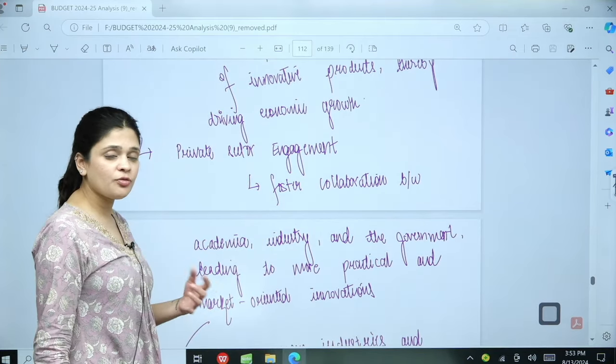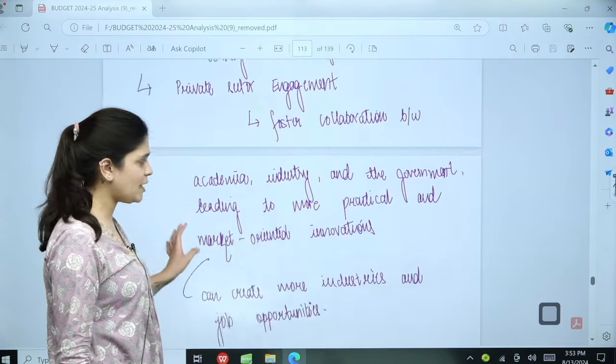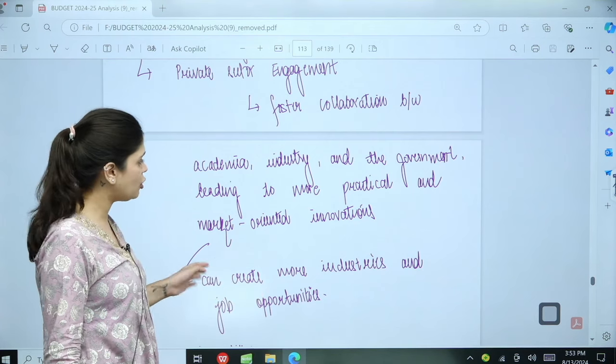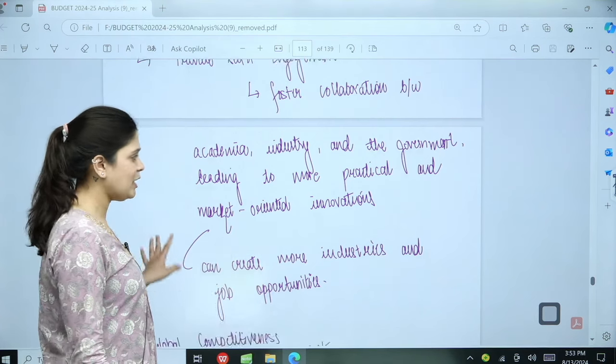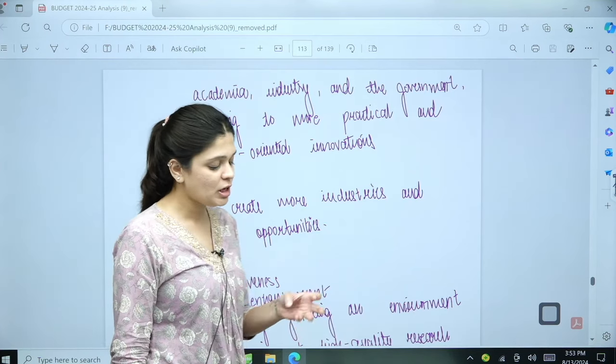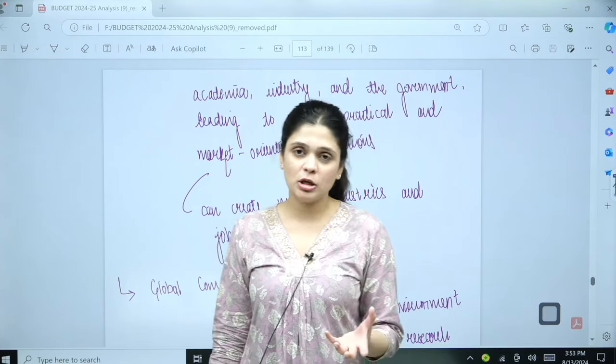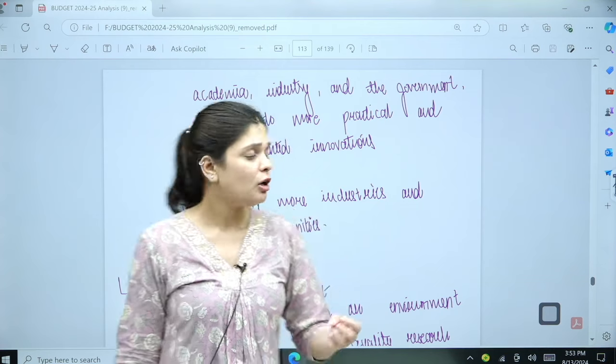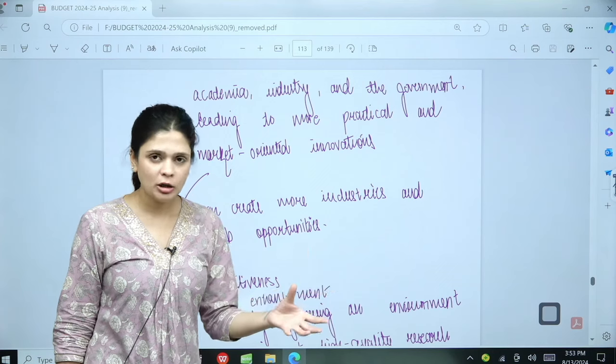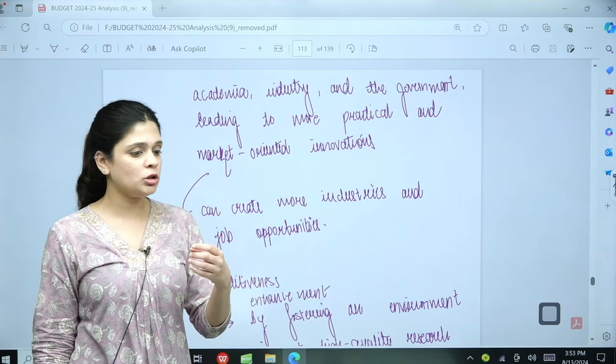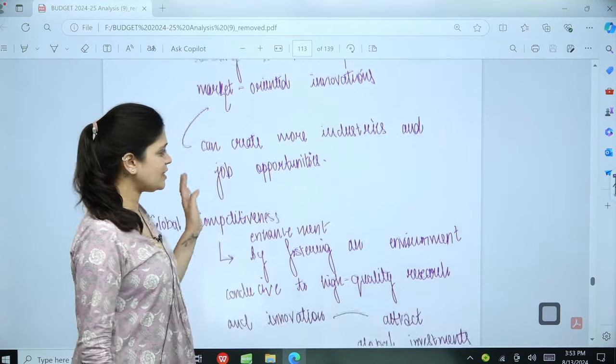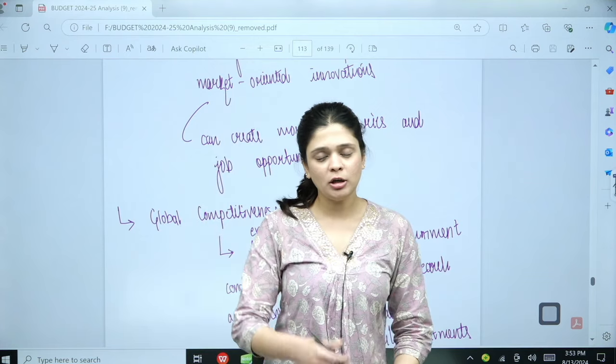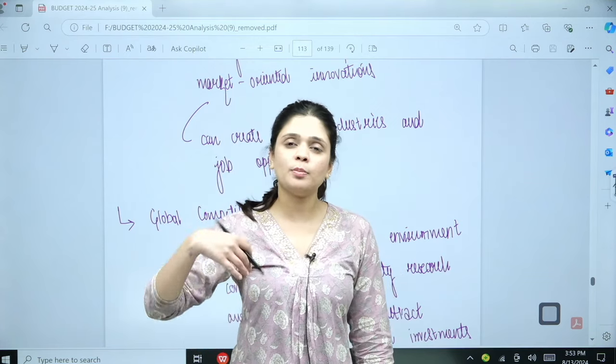Private sector engagement because we are fostering collaboration between academia, industry, and the government leading to more practical and market oriented innovation. If the private sector gets involved and collaborates with the government, the best thing is that more quality, more innovation and more market oriented products are actually produced. This can create more industries and obviously if private sector is getting employed or collaborated, then more employment opportunities will be generated in the economy.